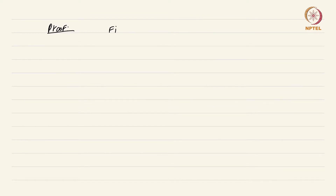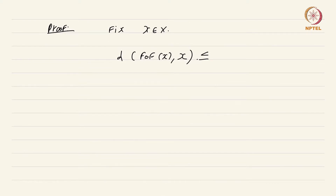Proof: Fix a point x in X. Now let us just see what happens to the point f∘f(x). The distance from f applied to the point x twice in succession — by our hypothesis that this is a contraction, this is going to be less than or equal to c times d(f(x), f⁻¹(x)), but unfortunately f need not be invertible, so we cannot apply such an argument. What we can do is write this as d(f∘f(x), f(x)) + d(f(x), x).